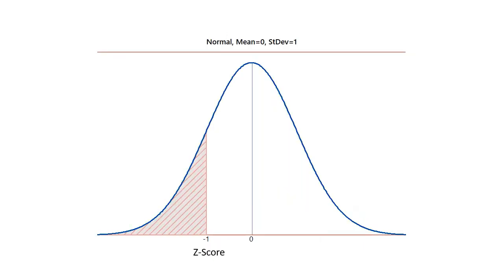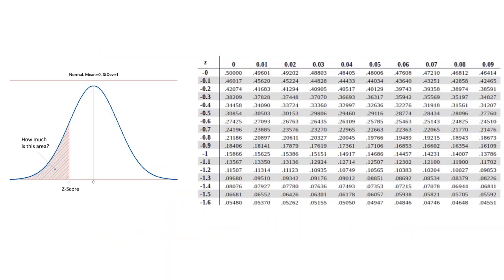Most importantly, a z-score allows us to calculate how much area that specific z-score is associated with. And we can find out that exact area using a z-score table. This table tells us the total amount of area contained to the left side of any z value.